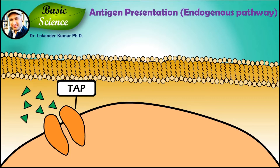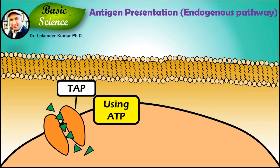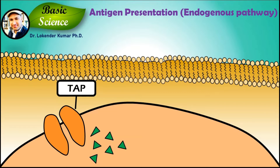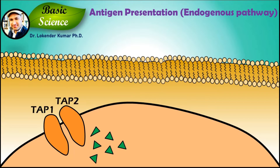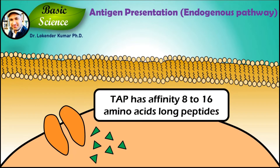The generated peptides are then transported inside the rough endoplasmic reticulum using a transporter protein known as transporter associated with antigen processing, in short TAP. The peptides are transported into the rough endoplasmic reticulum in an ATP-dependent manner. TAP is a heterodimeric protein made up of TAP1 and TAP2 units, and has affinity for 8 to 16 amino acid long peptides.